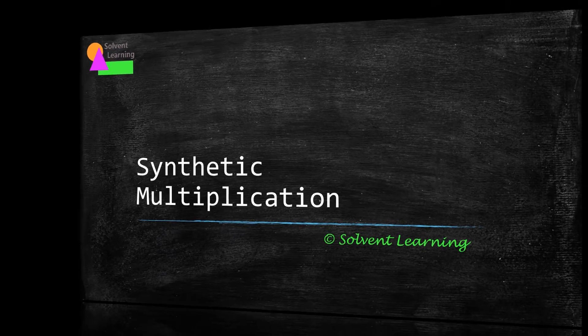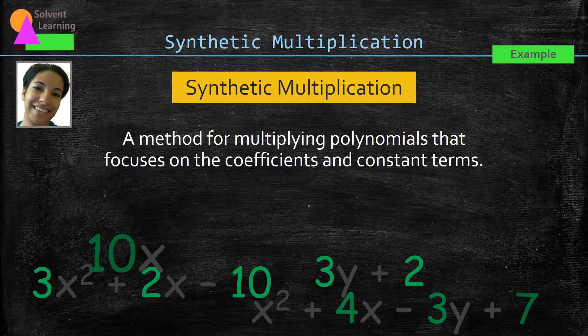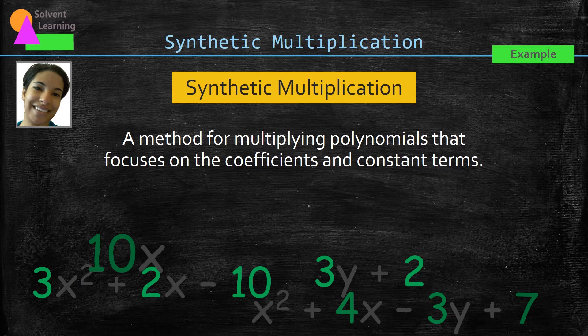Synthetic multiplication. In this lesson, we're going to learn how to multiply polynomials using synthetic multiplication. This is a method for multiplying polynomials that focuses on the coefficients and constant terms. We're just looking at the numbers as we go through our steps, and then we take care of the variables at the end.